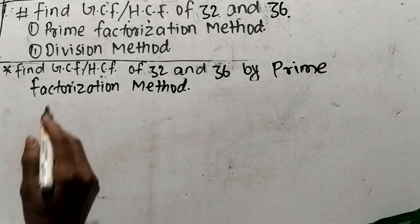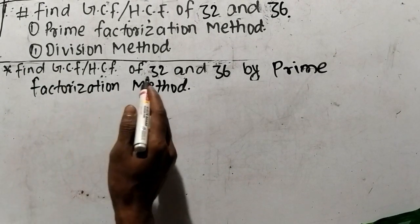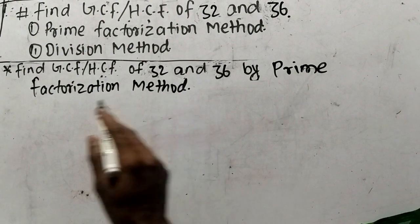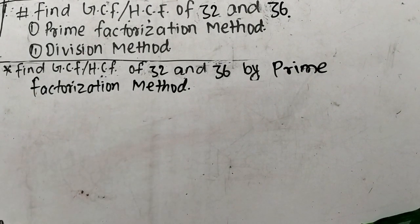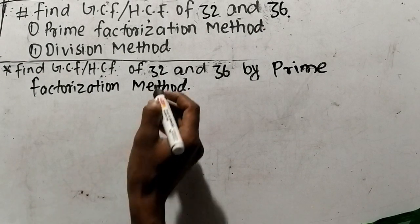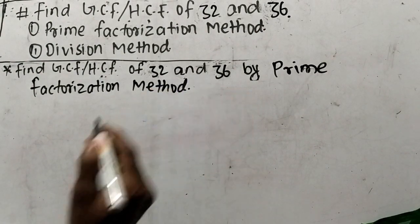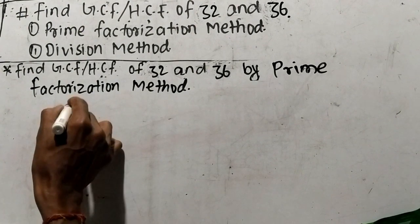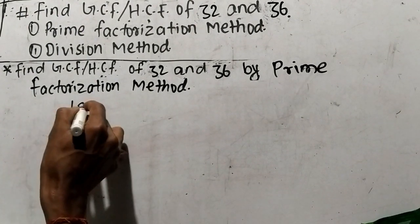So let's find out GCF or HCF of 32 and 36 by prime factorization method. While finding out GCF or HCF by prime factorization method, first of all we have to find out the prime factors of the given numbers. So here the numbers are 32 and 36.